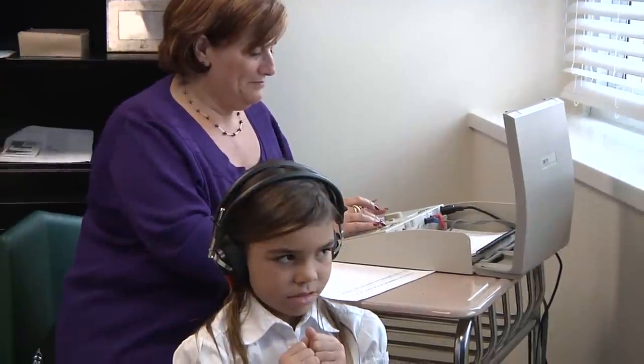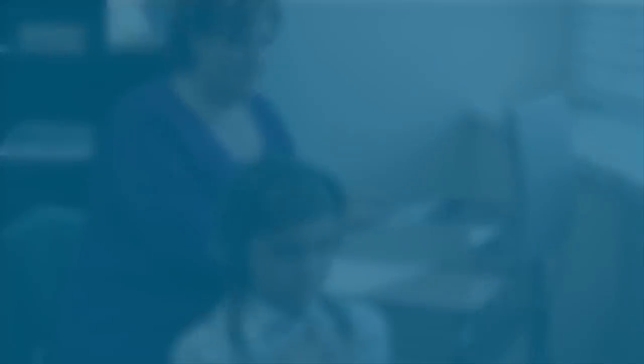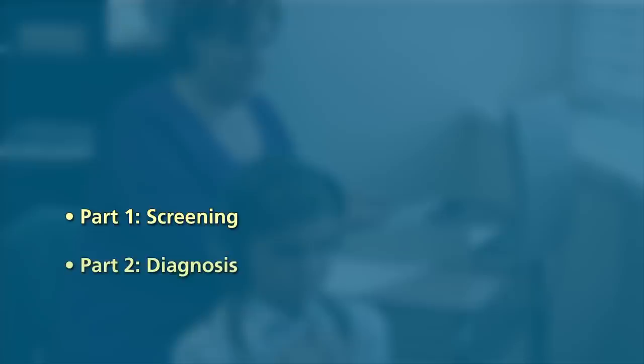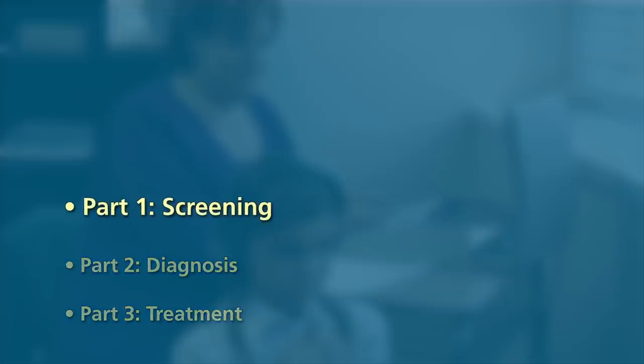Programs focused on finding and treating hearing loss consist of three parts. Part 1, Hearing Screening — this identifies children suspected of having hearing loss. Part 2, Diagnosis — this involves either confirming or ruling out hearing loss. And Part 3, Treatment — this involves medical and/or audiological treatment to meet the needs of the child with hearing loss. This video will discuss the first step in the process: hearing screening.